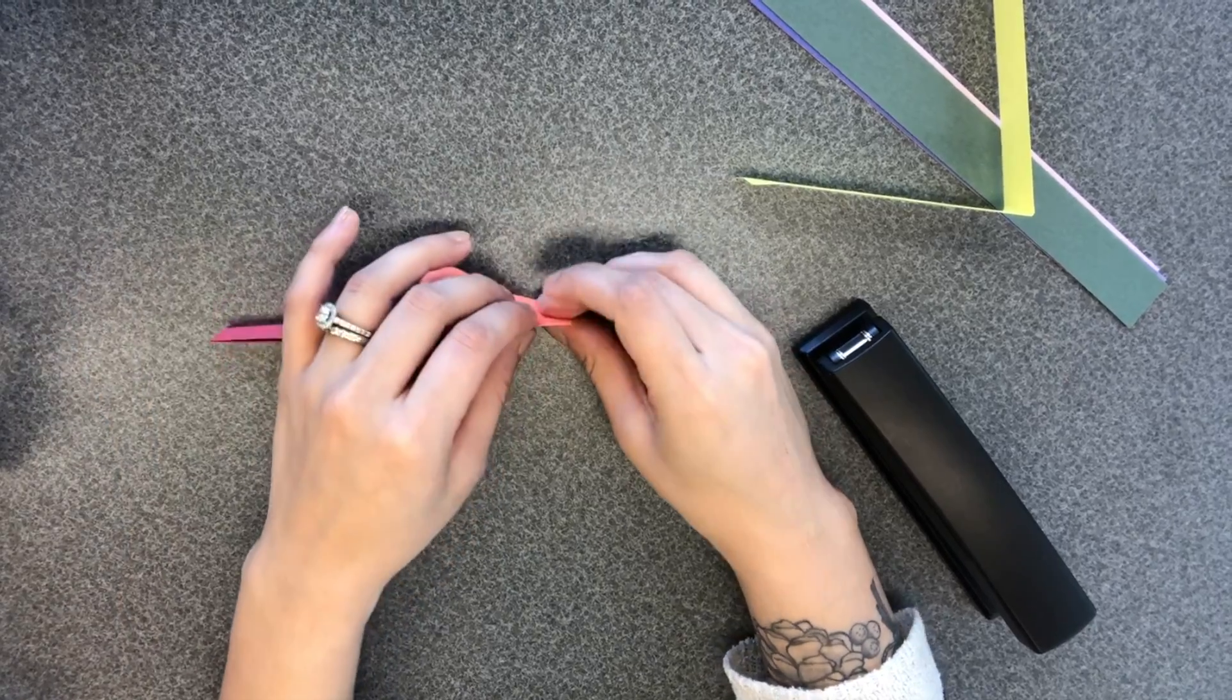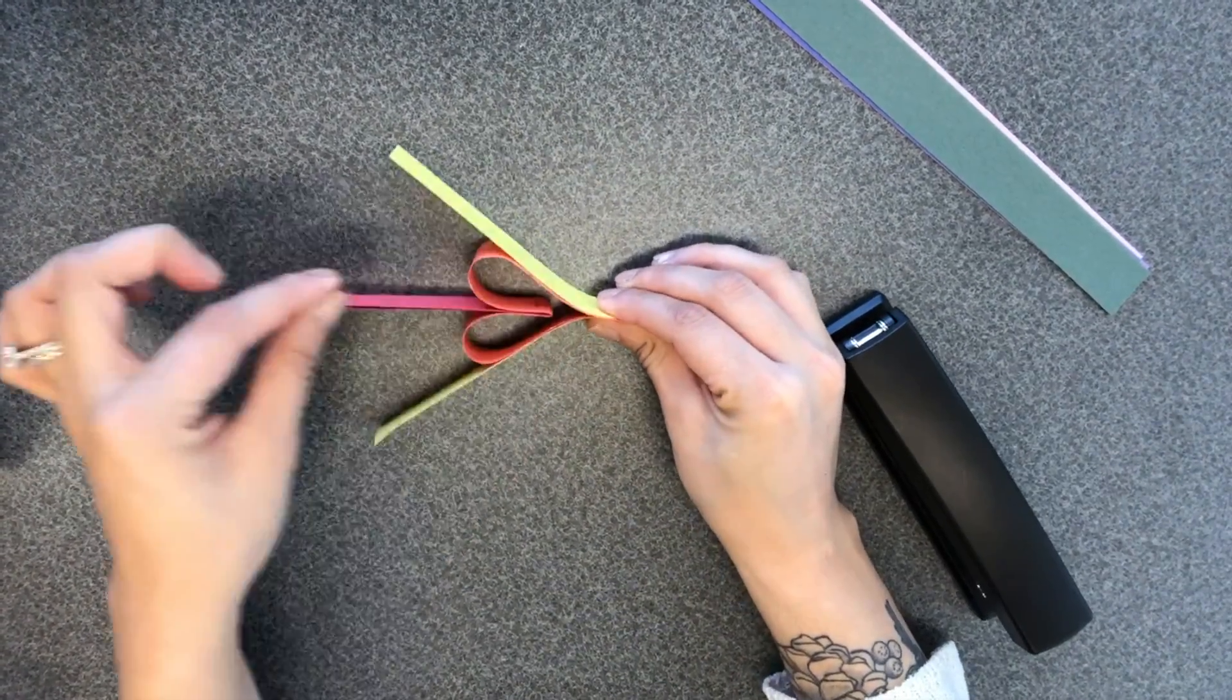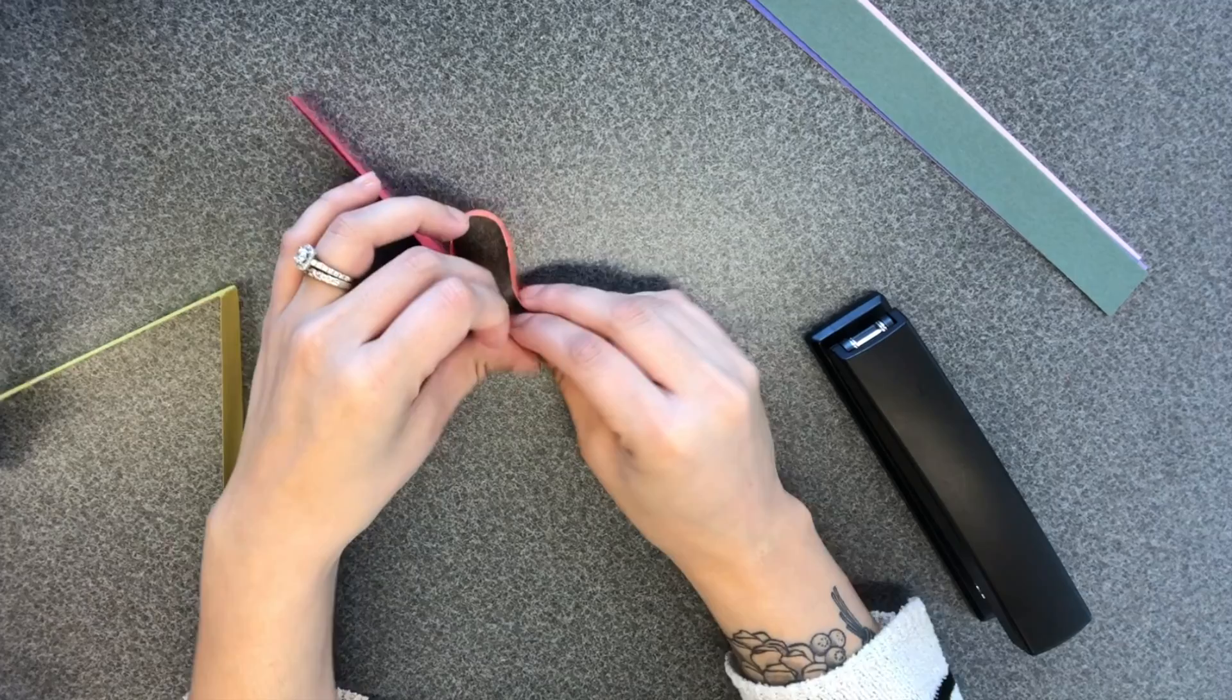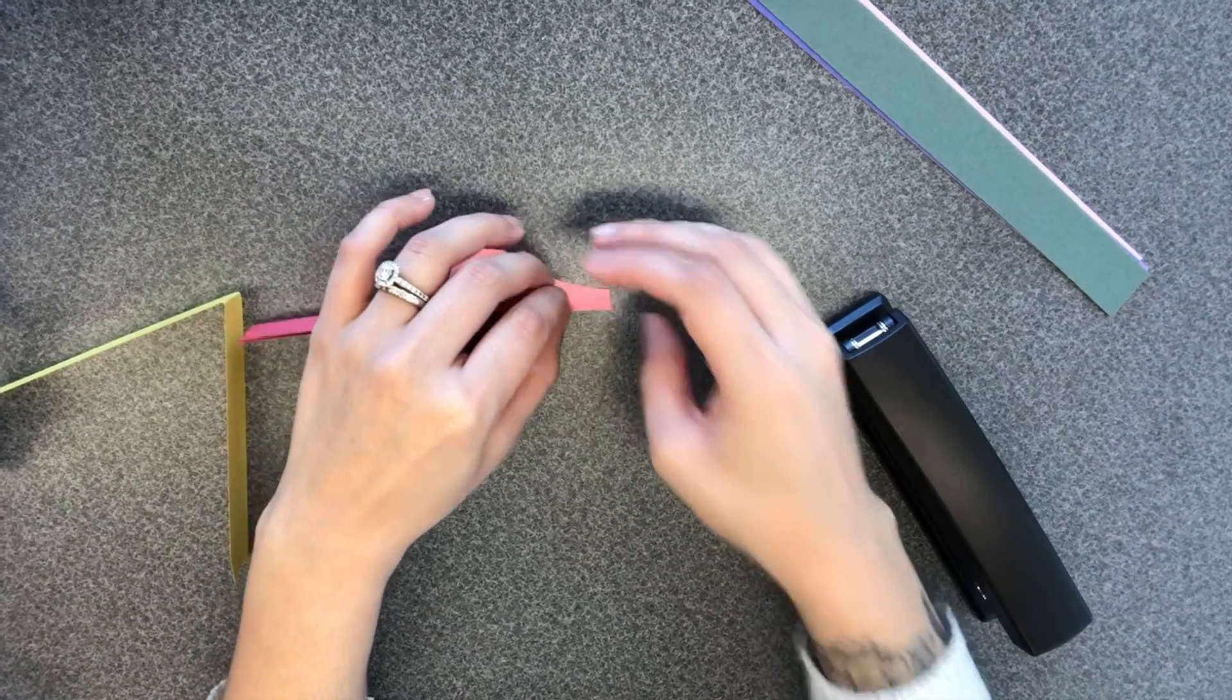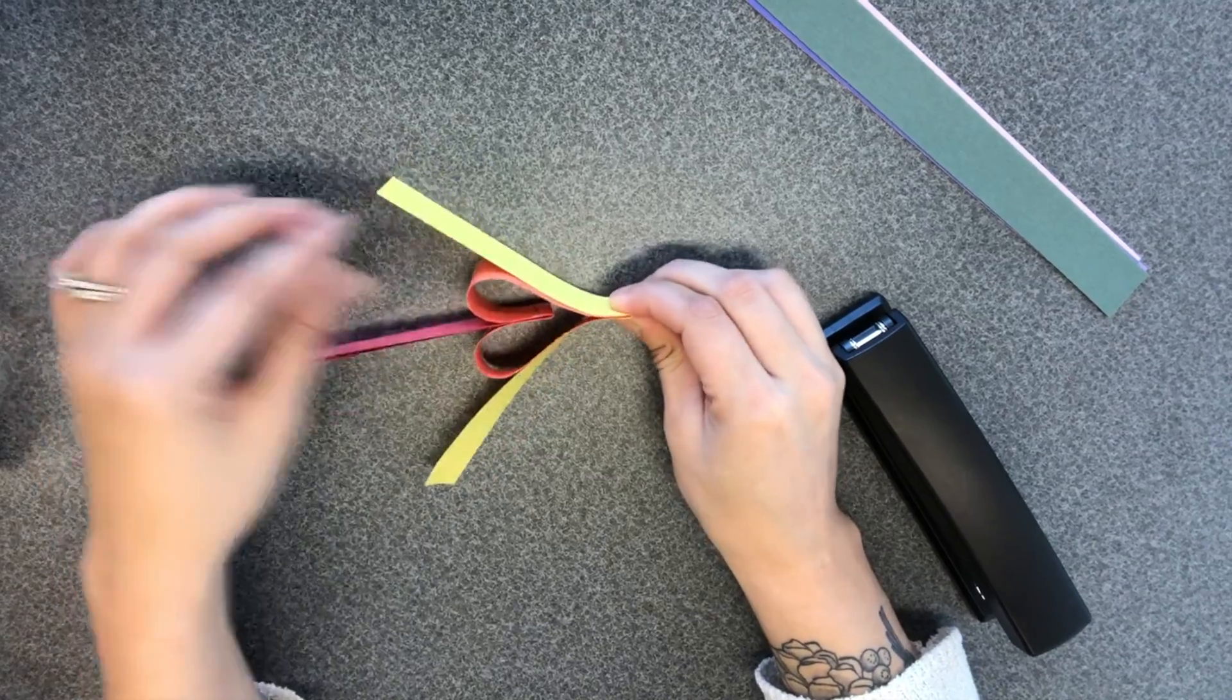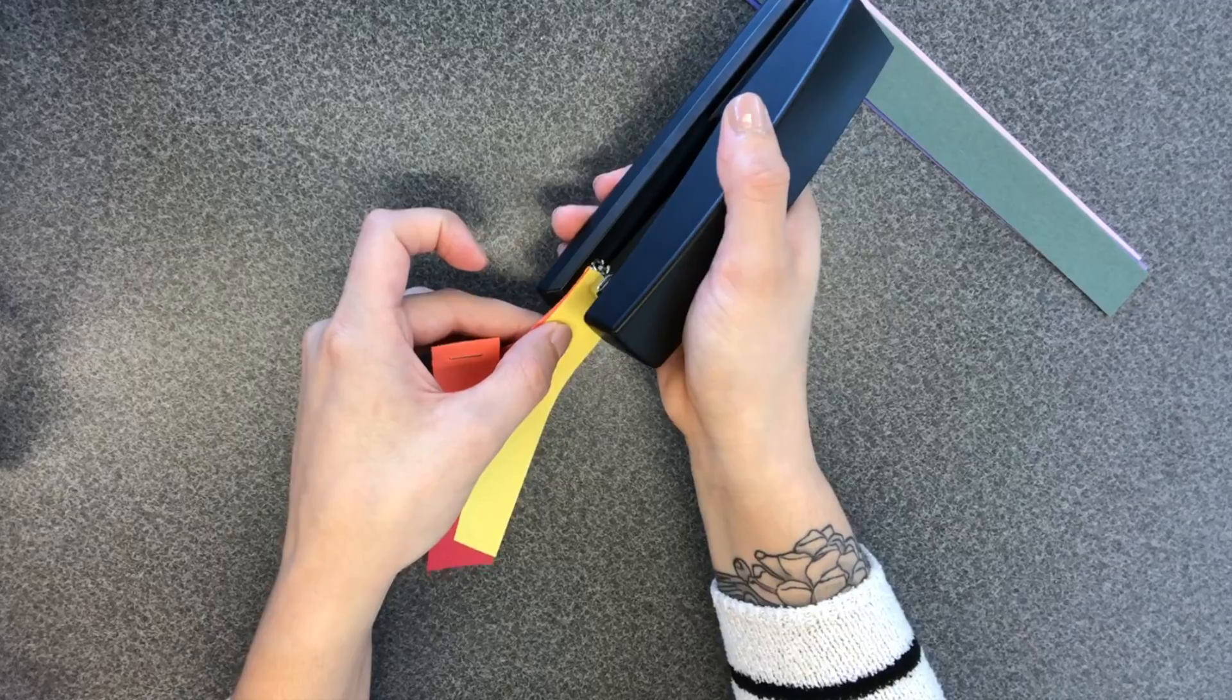And you want to take your next color strip and place that at the bottom. So just make sure you hold on kind of tightly to these while you're going to staple them. They tend to want to try to pop out of place, but it's fine. You can just reset them. And again, you're going to take the folded bottom of the next strip and staple it to both of the loose ends on the color before. Kind of like this.